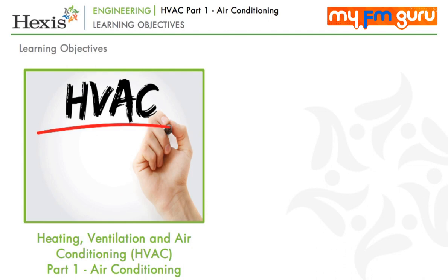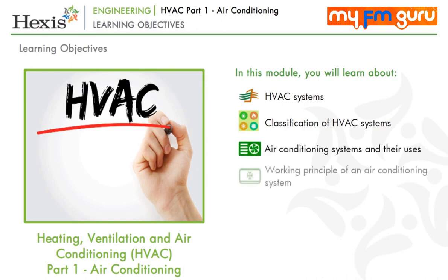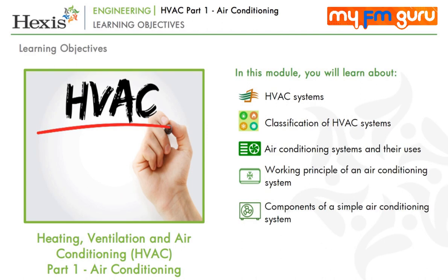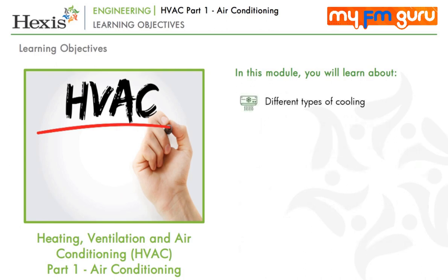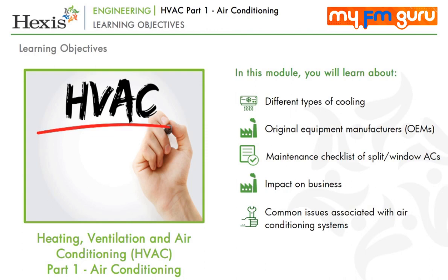Let's take a look at the learning objectives of this module. By the end of this module, you will be able to describe the HVAC system, classify the HVAC systems, understand air conditioning and why we require it, explain the working principle of an air conditioning system, discuss the components of a simple air conditioning system, describe the various types of air conditioning units, list the different types of cooling, name the original equipment manufacturers (OEMs), list the maintenance checklist of split or window ACs, explain the impact on business, and explain the common issues associated with air conditioning systems.